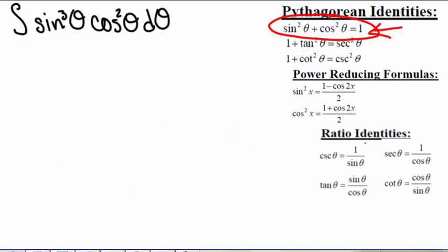So if we go back and we try u equals cosine of theta, then we get du equals negative sine theta d theta.